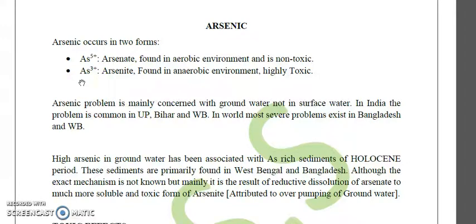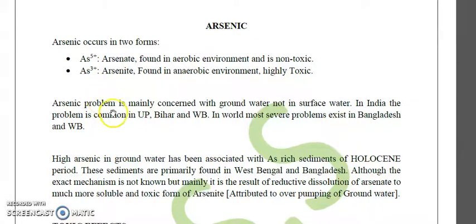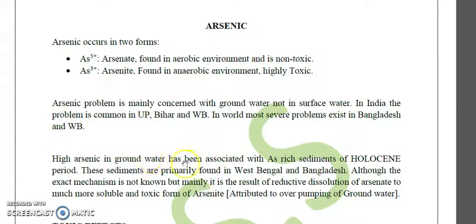The reduction of arsenate (As⁵⁺) to arsenite (As³⁺) happens in reduced environments such as sediments, where methanogenic activity occurs. This arsenic problem is most common in India — particularly Uttar Pradesh, West Bengal, and Bihar — and globally in West Bengal and Bangladesh. Importantly, arsenic contamination is a problem of groundwater, not surface water.